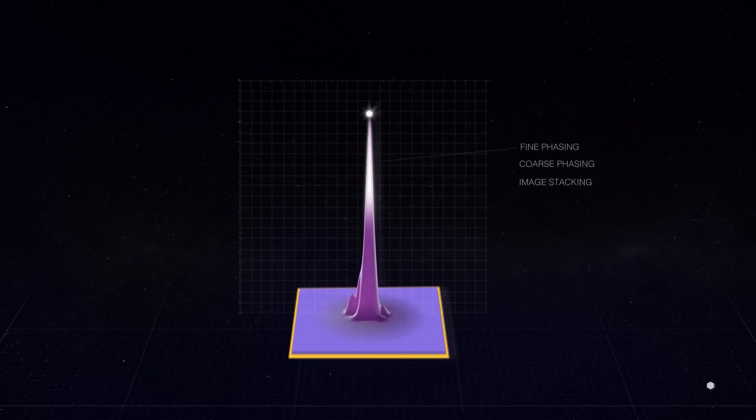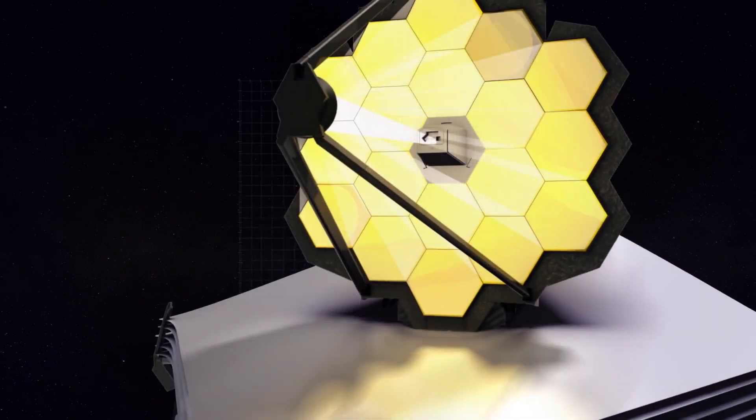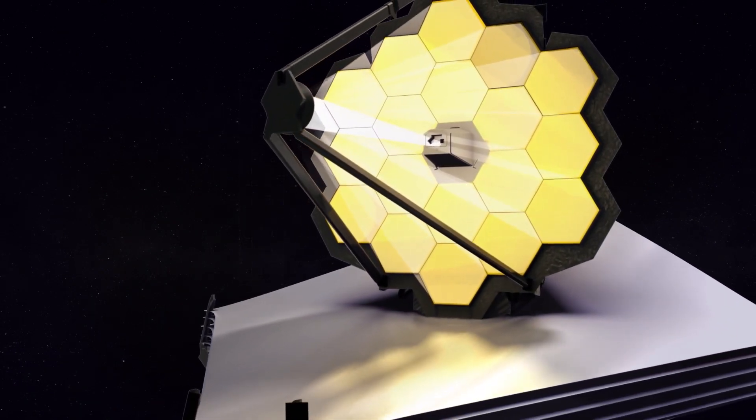According to the European Space Agency, the imagery and first spectroscopic data from the James Webb Space Telescope will be unveiled on July 12.